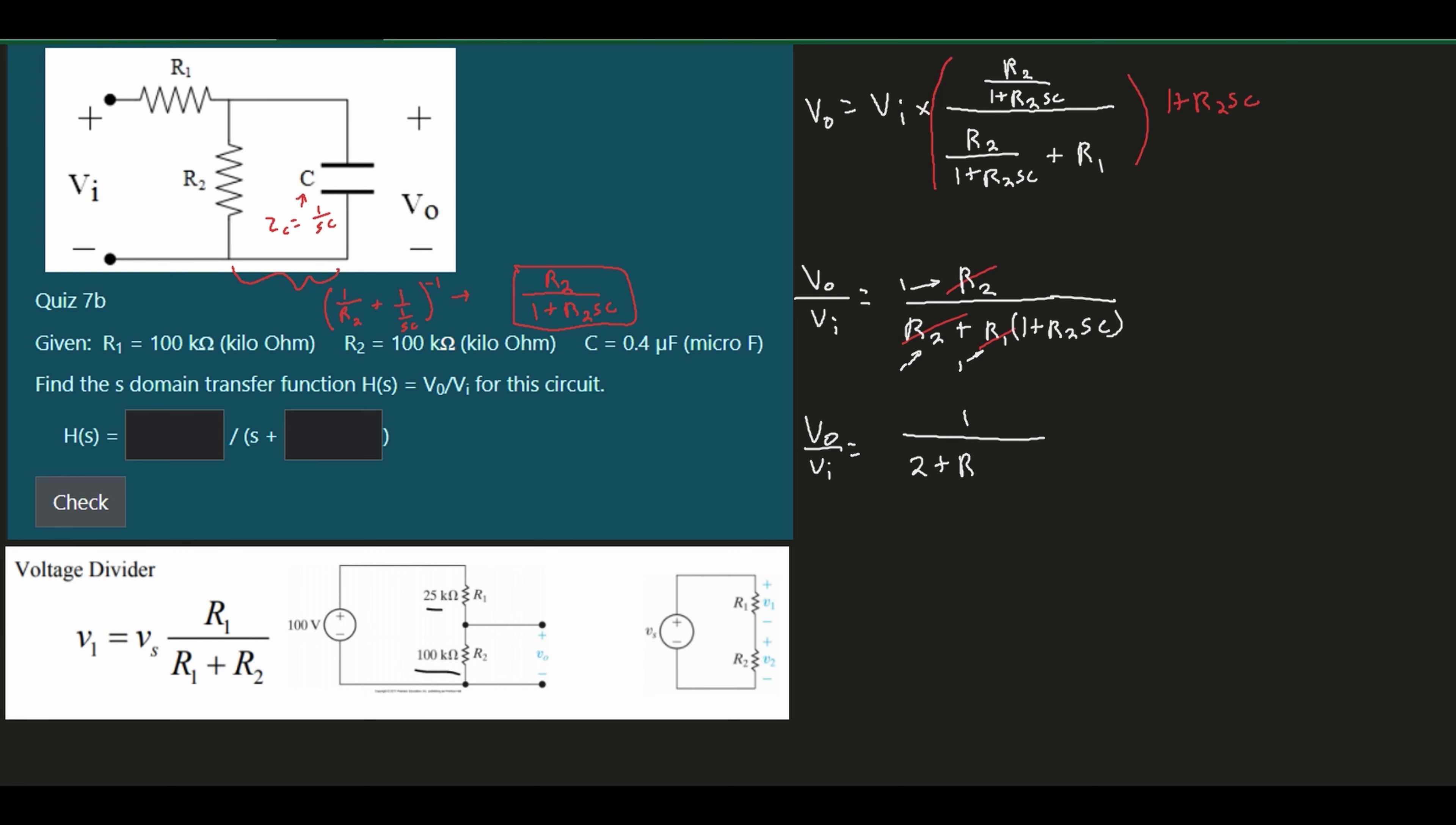But we can just plug in these values. So we're going to have a plus, we're going to have an S here. Our C is 0.4 microfarads, and micro stands for 10 to the negative 6th. And then we have our C. Or, I'm sorry, this is our C. So now we would have our R2. And our R2 is just 100 times 10 to the cubed. And so this is going to be our new equation.